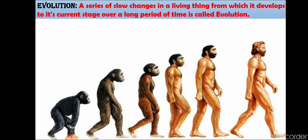Evolution is not a process of one day. It takes thousands and millions of years for something to evolve. Human beings also evolved. Our scientists and historians believe that we human beings evolved from the apes. Earlier, we were just like monkeys and slowly some changes took place in us and we became like this. Every living thing has developed and changed over a certain period of time, reaching its current stage over a long period — that is evolution.